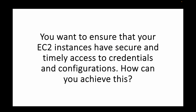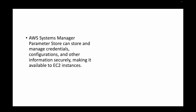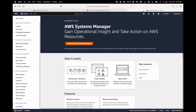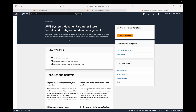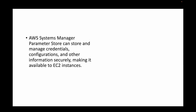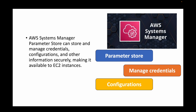The next question is: you want to ensure that your EC2 instances have secure and timely access to credentials and configurations — how can you achieve this? For this, we can again make use of Systems Manager, and specifically the Parameter Store feature. We can use Parameter Store to store all our parameters — whether sensitive data or plain text — and this helps us store and manage credentials, configuration details, or any information securely, making it easily available to your EC2 instances.